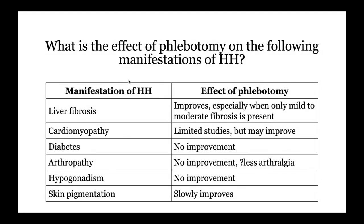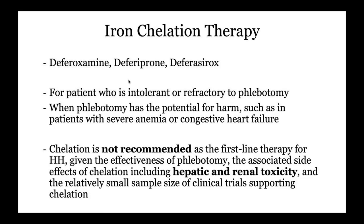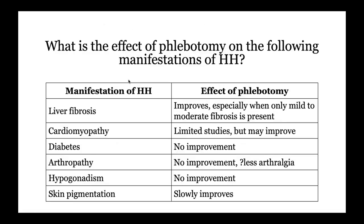For counseling: also remember to tell patients to avoid shellfish, because that can cause Vibrio infection and potentially mortality — that's a board question. Chelation therapy is an option for patients who are intolerant or refractory to phlebotomy, but is generally not recommended as first-line therapy. PPI is not generally recommended for everybody with hemochromatosis. Liver transplant is only considered in end-stage liver disease, cirrhosis, or HCC. Iron overload is not a contraindication to transplant, but transplant does not resolve the genetic issue — patients may develop another onset of liver injury.